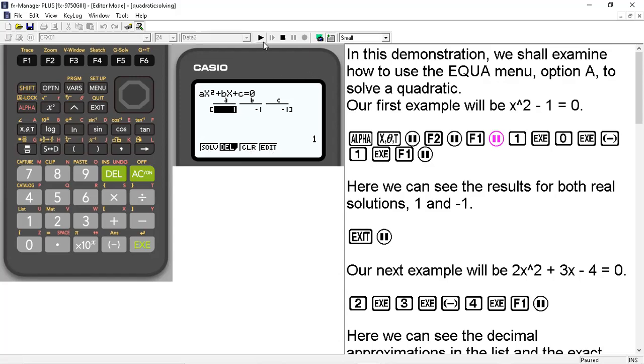So let's go ahead and type in our coefficients. We have 1x². So we had 1 in exe. We have 0x. So we do 0 exe. And then we do -1 for the constant in exe. And then we hit F1 to solve.